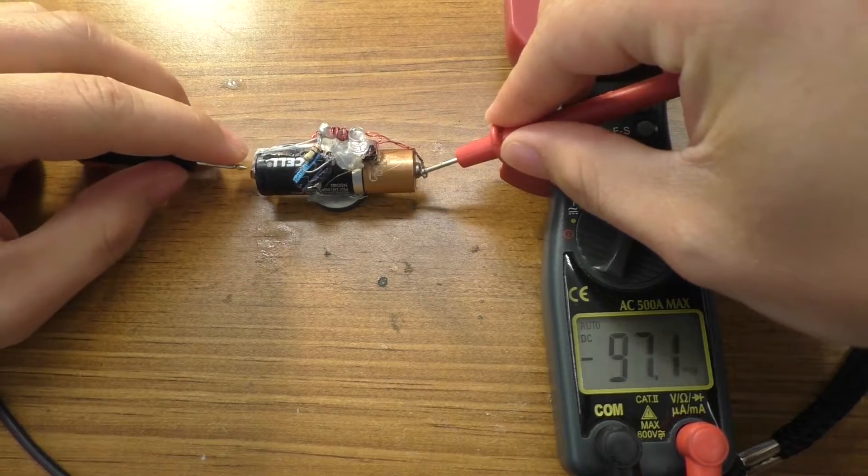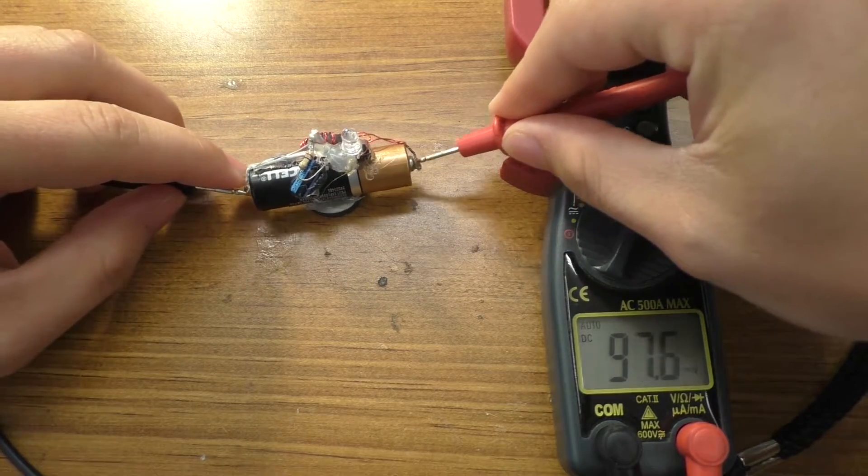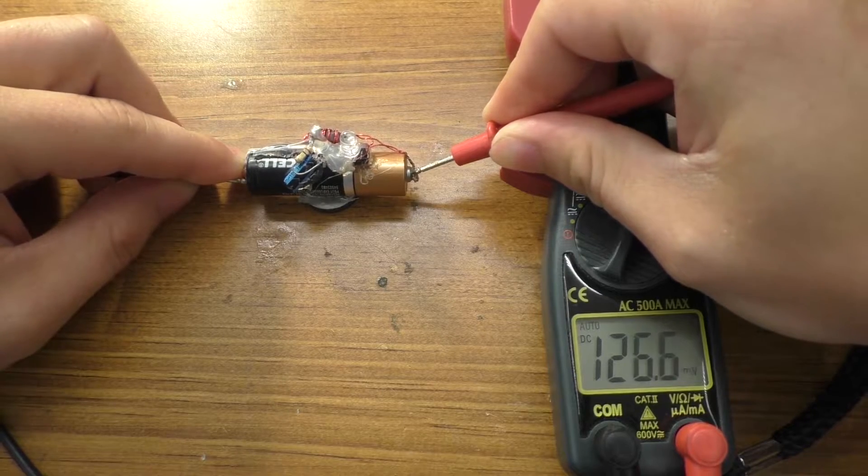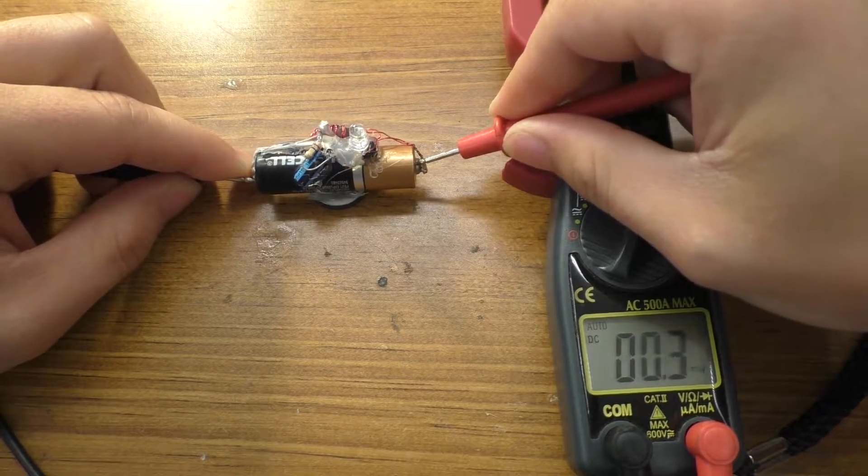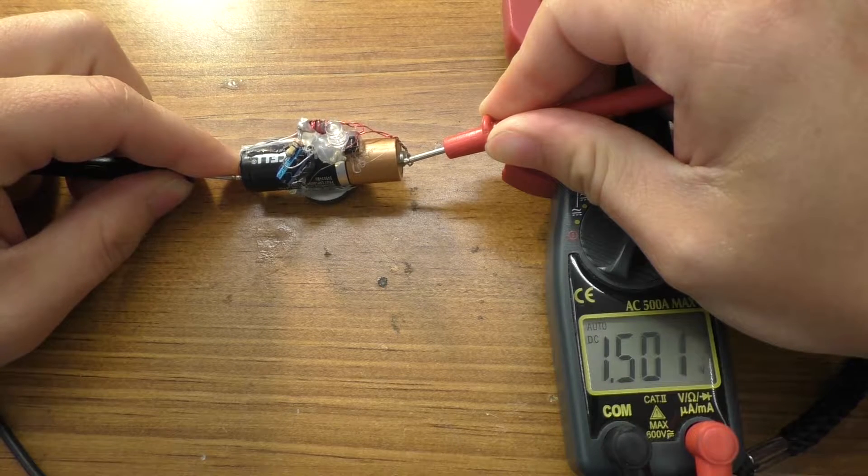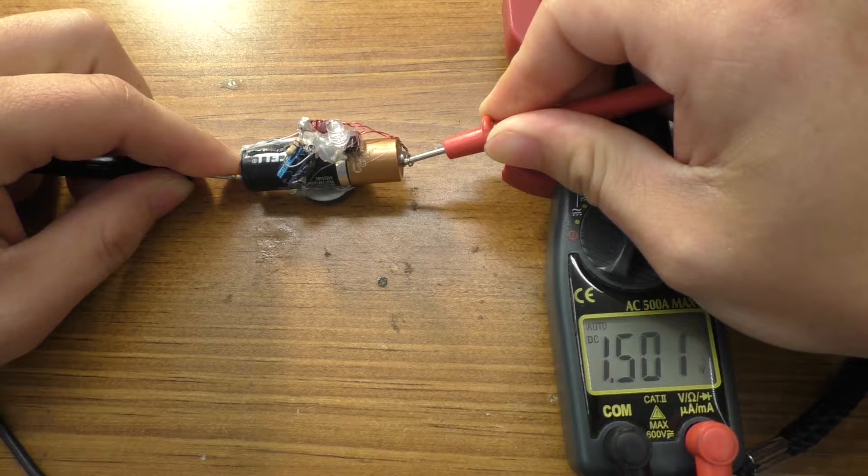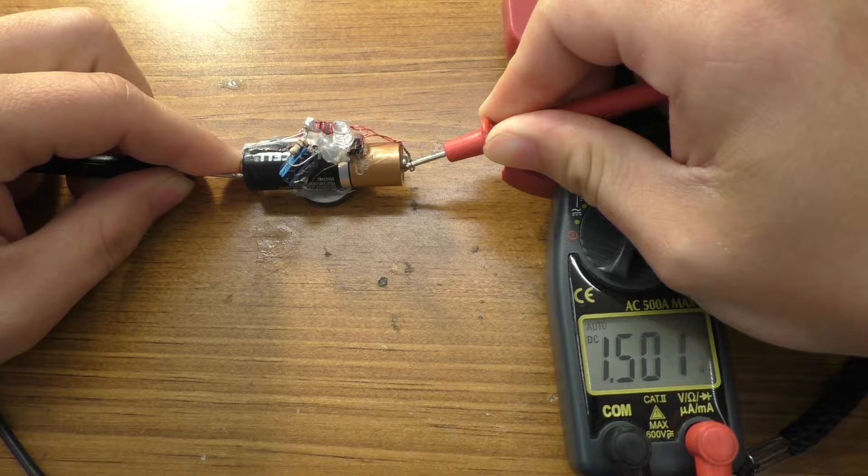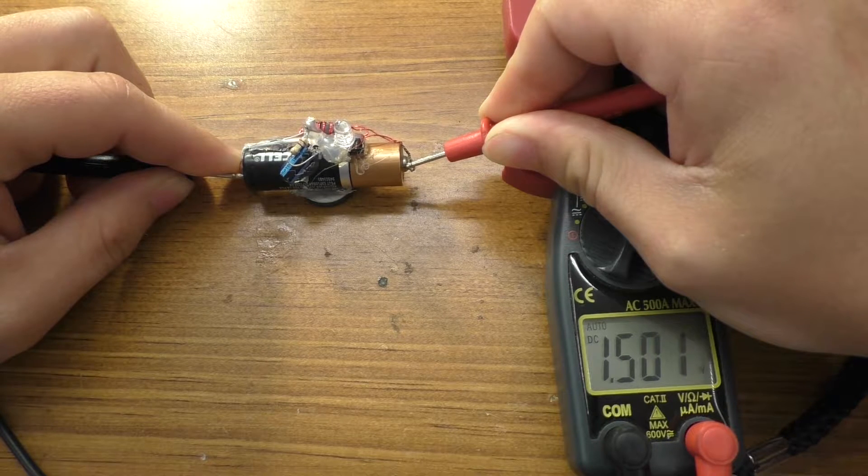Kind of a tricky thing to do. Not a whole lot of working space here. Camera's down pretty low. That is definitely not the battery voltage. Come on. 1.501 volts. So yeah, it's not dropping anywhere anytime fast, is it?